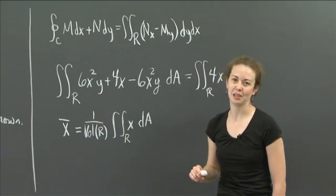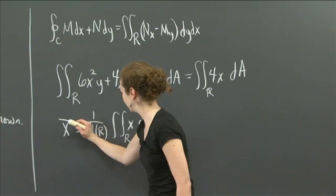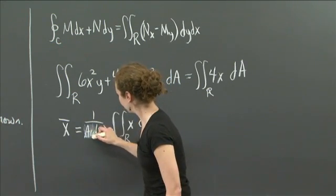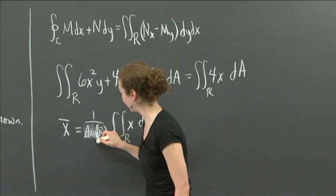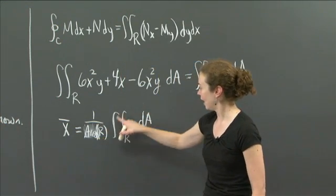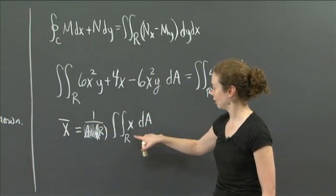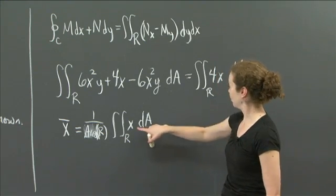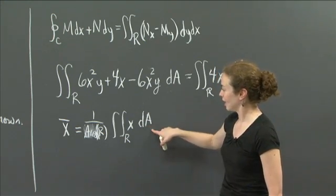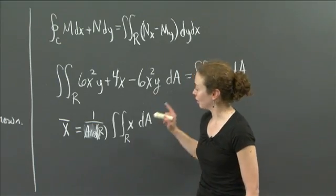So if I take 1 over the area, and then I multiply by the integral of x over R with respect to dA, then I get the center of mass. Okay?